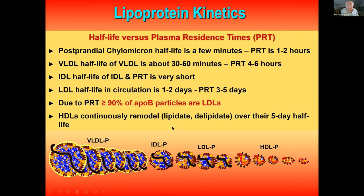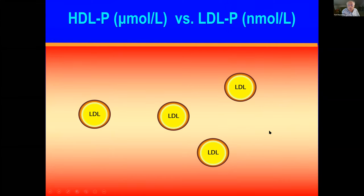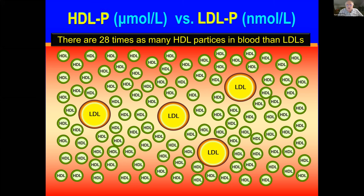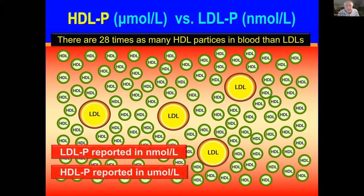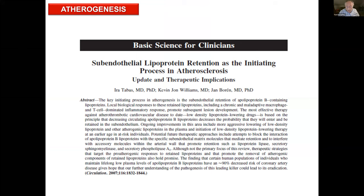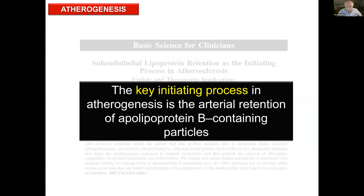You have 28 times as many HDL particles as you do LDLs in your blood right now. It's a good thing HDLs are not so atherogenic or we'd be in big trouble. If you're doing advanced metrics, LDL particle counts are reported in nanomoles — millionths of a mole — whereas HDL particles are reported in micromoles. That's a thousandfold difference. The key initiating process in atherogenesis is the arterial retention of ApoB-containing particles.